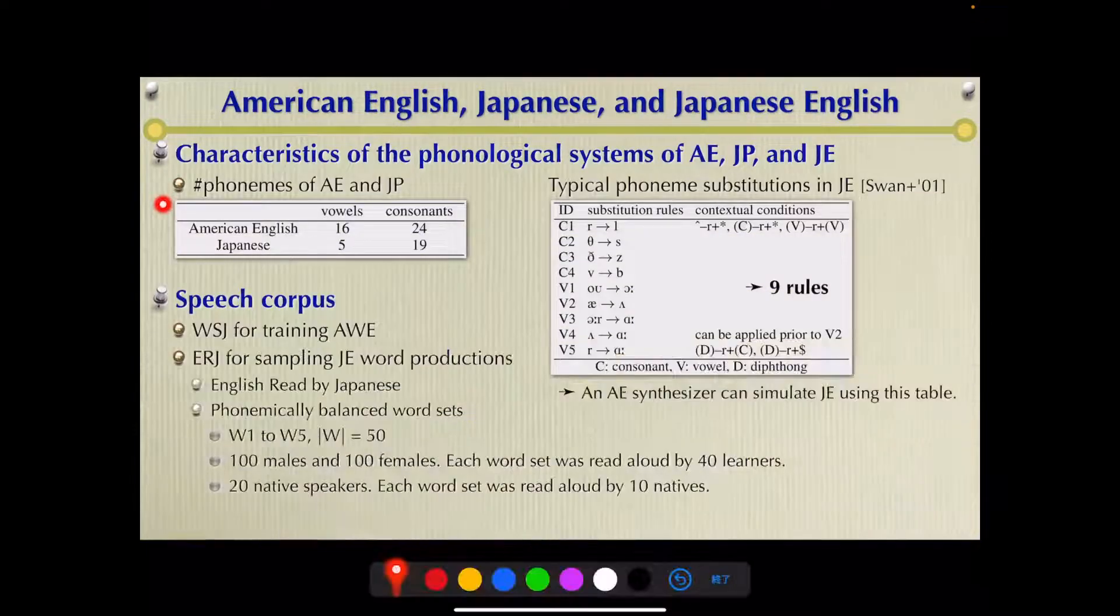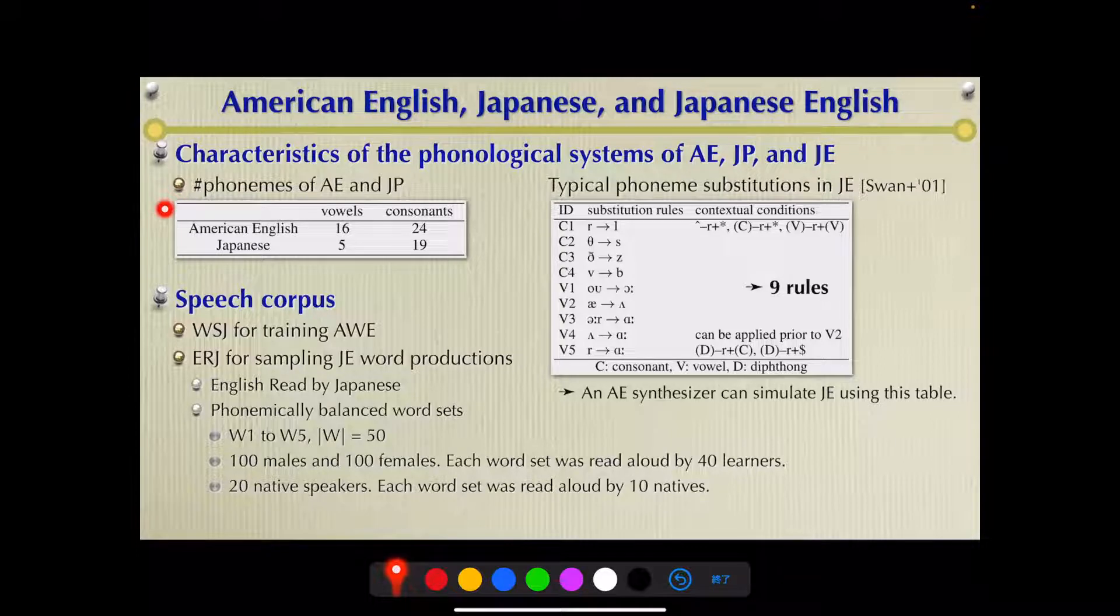This table shows the number of phonemes of American English and Japanese, and we can say that Japanese is a very compact language. And this table shows a list of typical phoneme substitutions found in Japanese English.